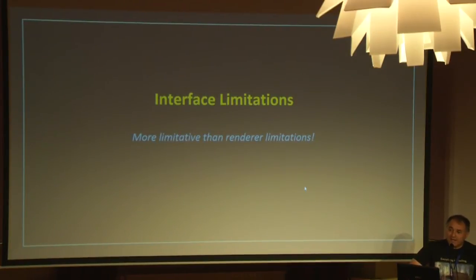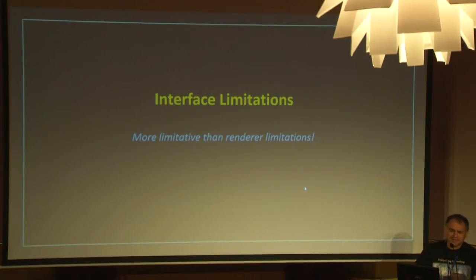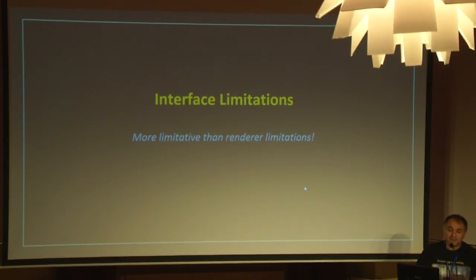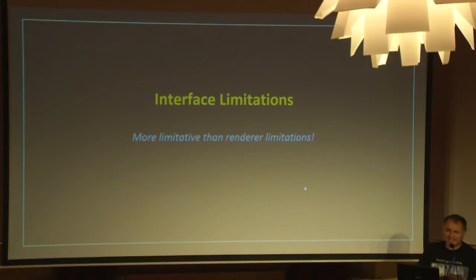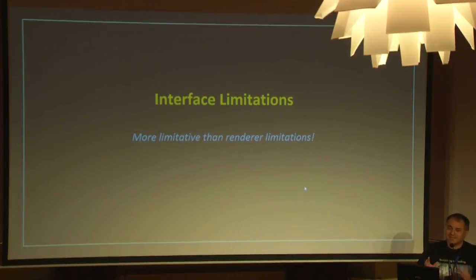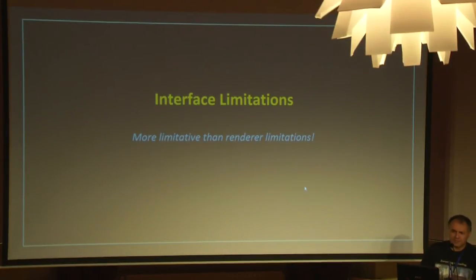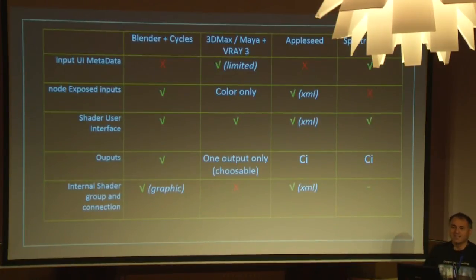The second limitation is not the way it is used in the software — it's interface limitation. It was a big surprise when I started to use many renderers, to see that having inputs in a renderer is not so obvious. When you have a shader in Cycles, you have input and output. If you are working with AppleSeed, you have no output — no output. So you have to use a standard CI closure. The shader is working, but the output and the input are not the same.